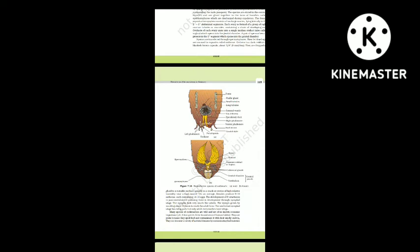A pair of spermathecae is present in the 6th segment, opening into the genital chamber. Sperms are transferred through spermatophores. Fertilized eggs are encased in capsules called oothecae — dark reddish to blackish brown capsules about 3/8 inch (8 mm) long, dropped or glued to a suitable surface near a food source. On average, females produce 9 to 10 oothecae each containing 14 to 16 eggs. The development of P. americana is paurometabolous, meaning development occurs through a nymphal stage. The nymph grows by molting about 13 times to reach adult form.